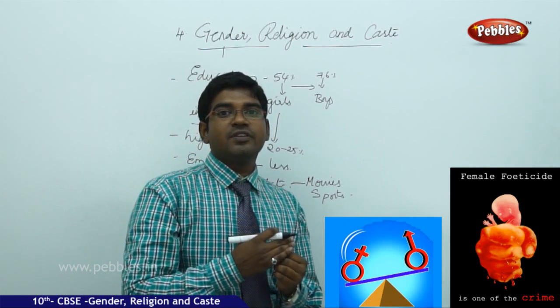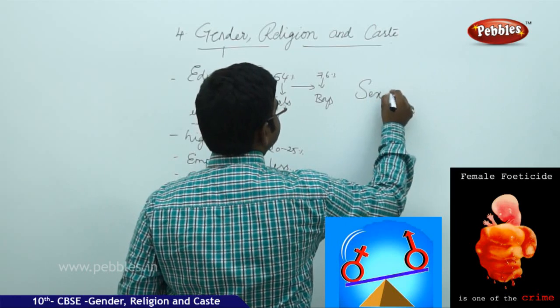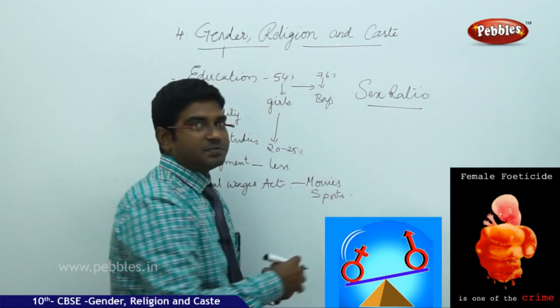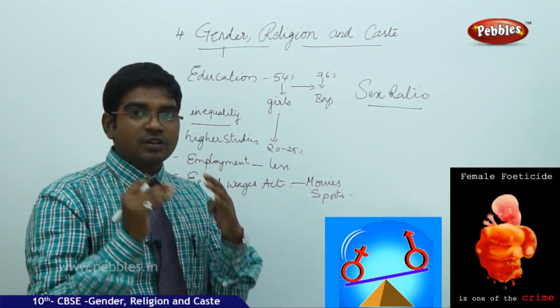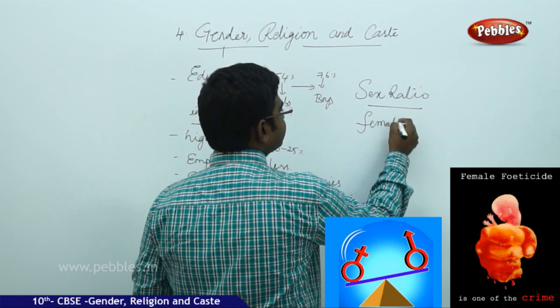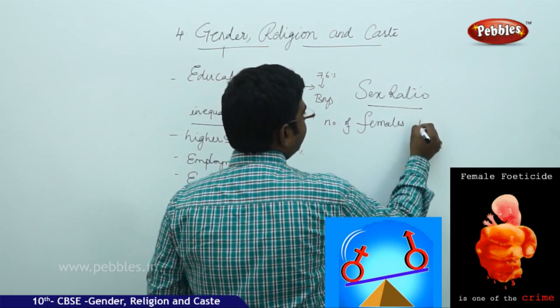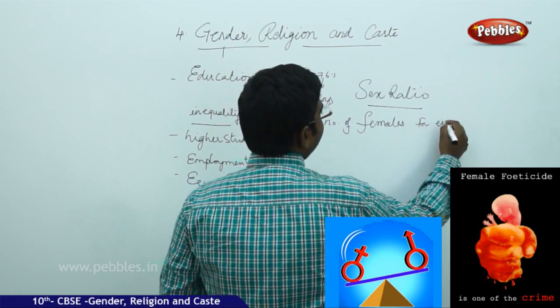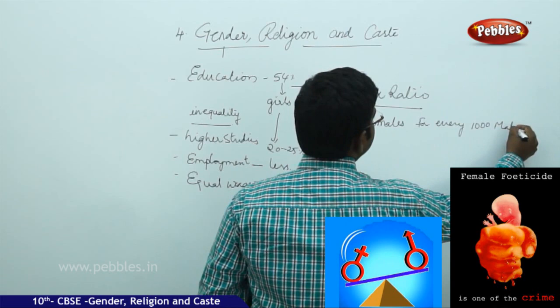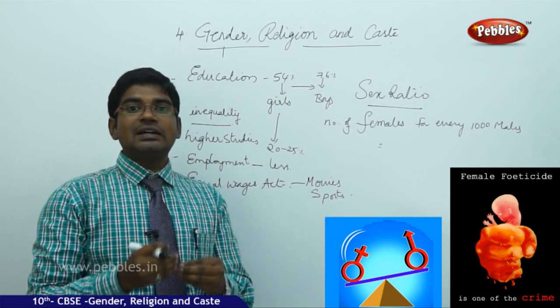And later on, we are now falling into a very alarming state where the sex ratio - so what is sex ratio? The number of females for every one thousand males is called sex ratio. The number of girls to every one thousand boys is called sex ratio. It is not anything dealt with biologically, it's just a calculation of the terms used.